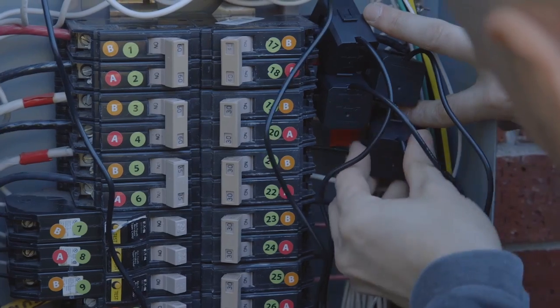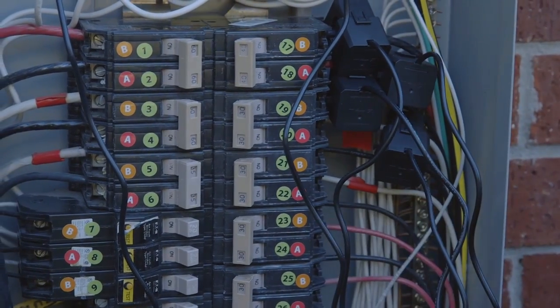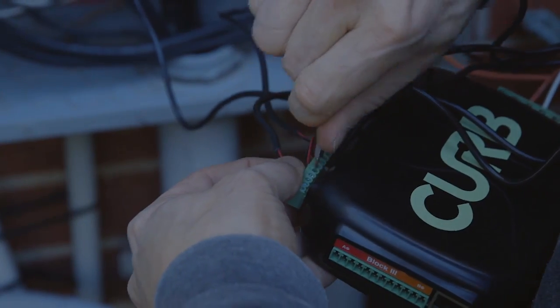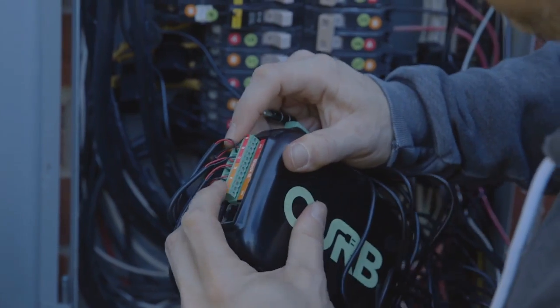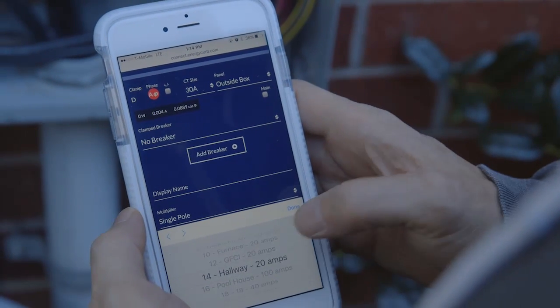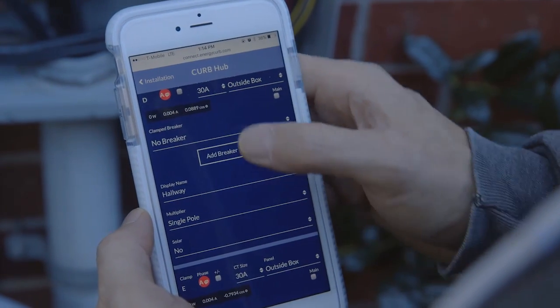Remember to check your work. Double check each clamp for secure closure and make sure each wire has a secure connection to Curb. Also confirm that each clamped circuit is documented correctly on the Curb website.